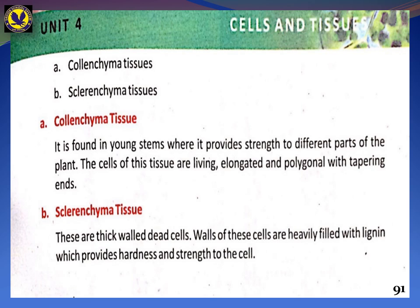Sclerenchyma tissue has thick-walled dead cells. The cells of sclerenchyma tissue are heavily filled with lignin. They provide hardness and strength to the cell.